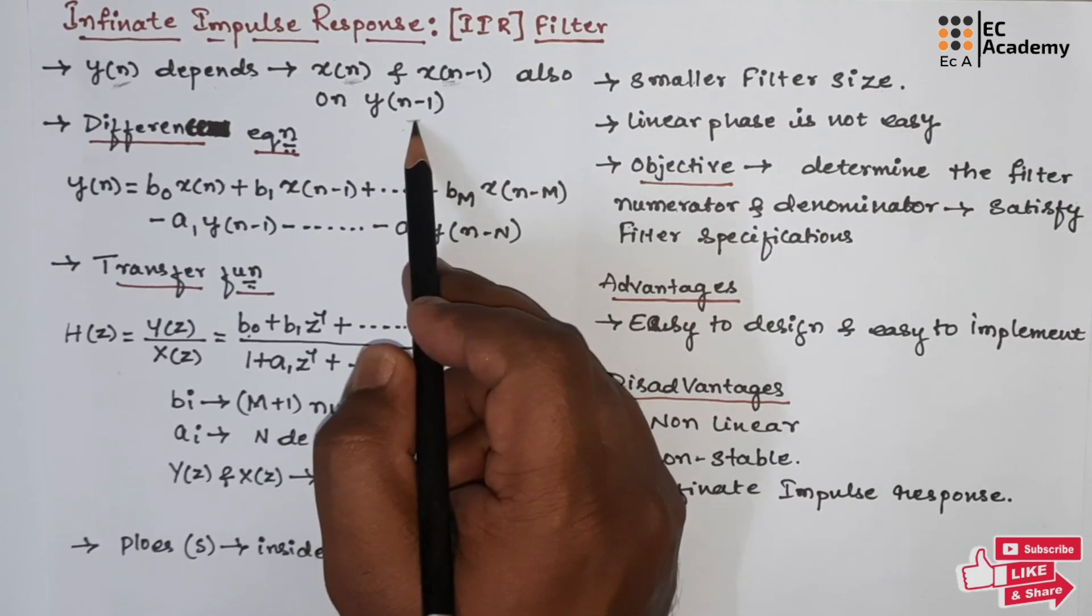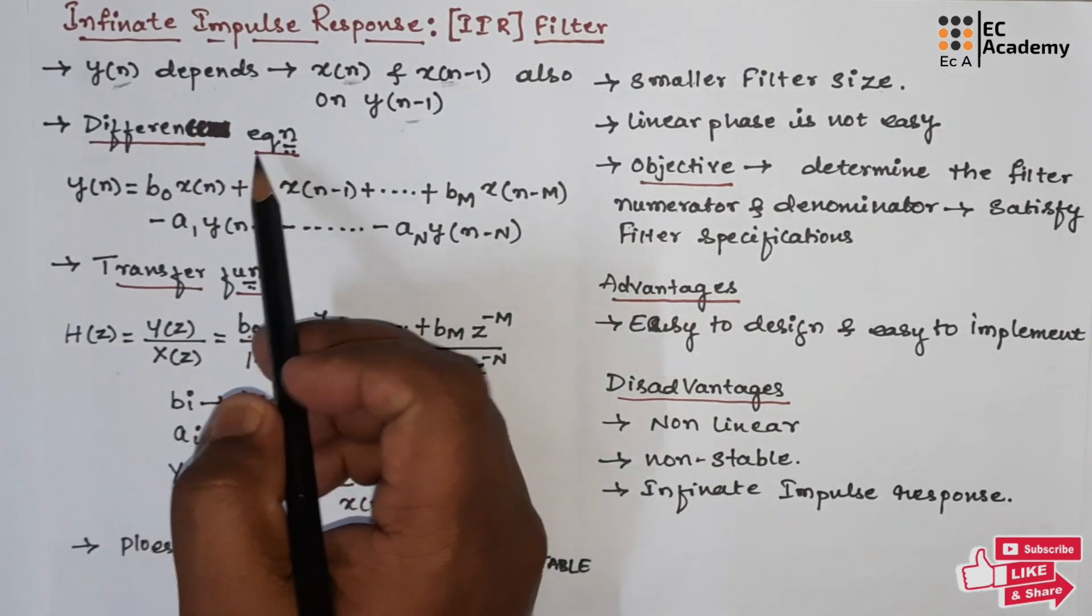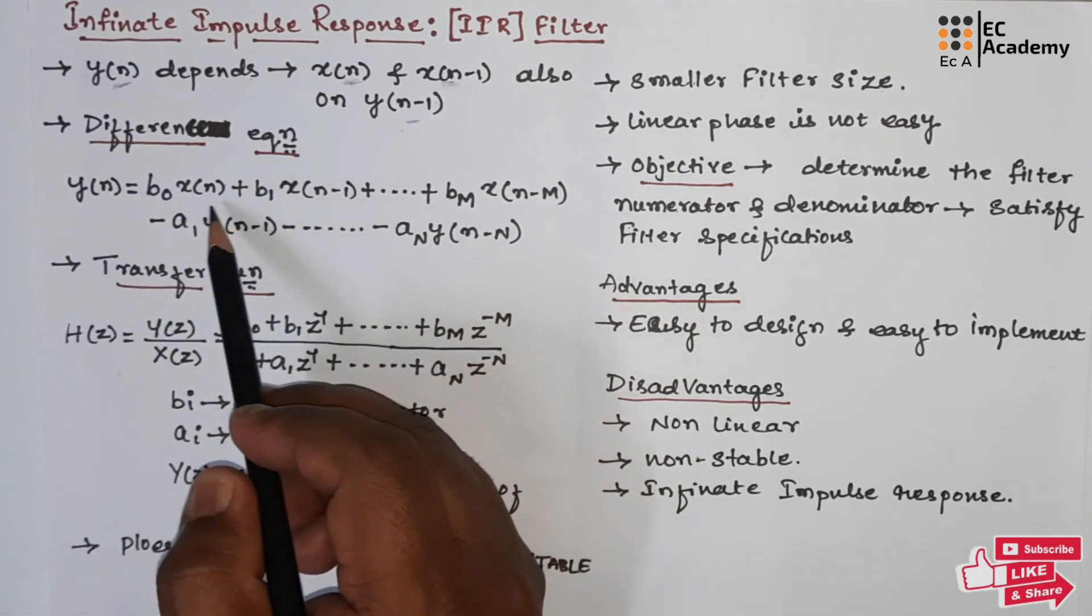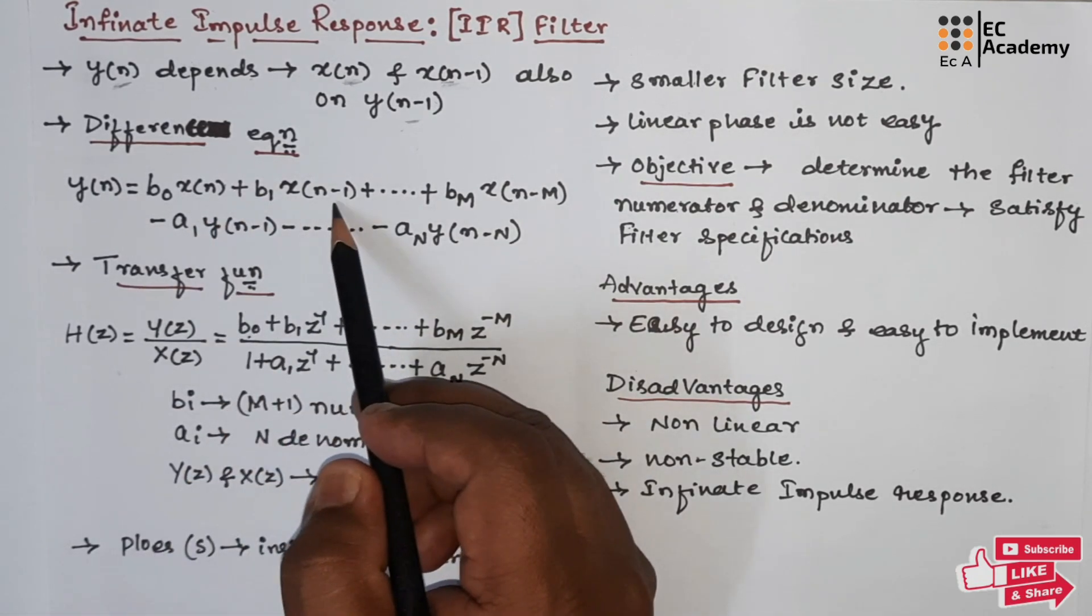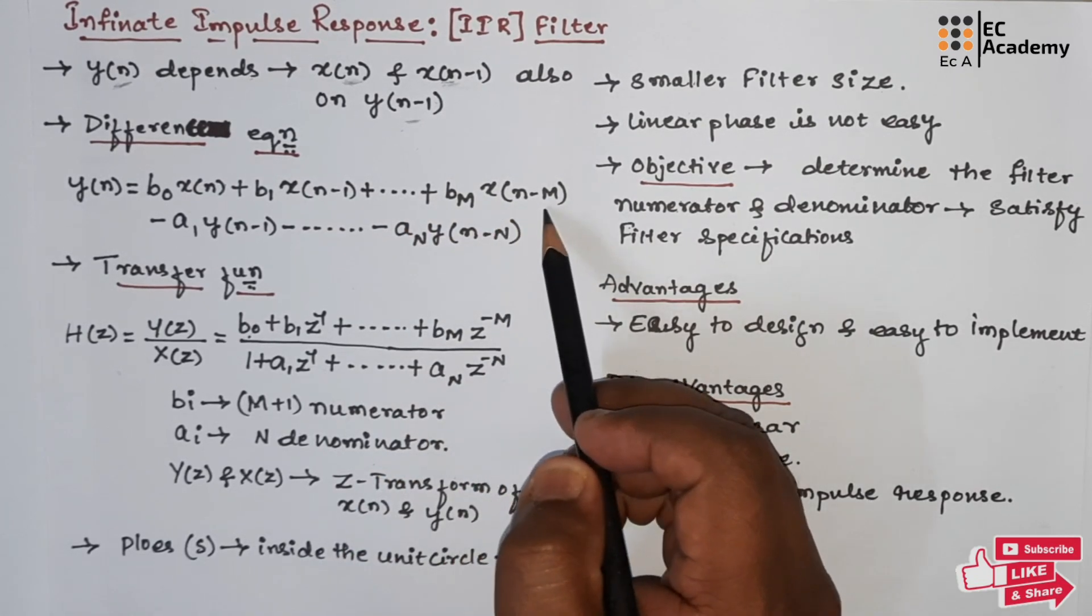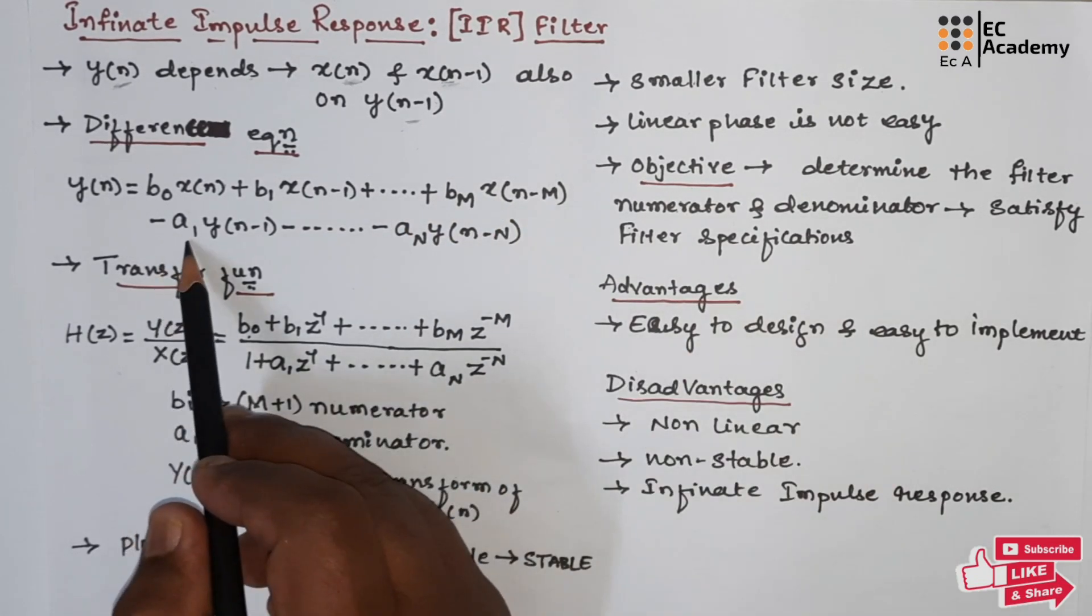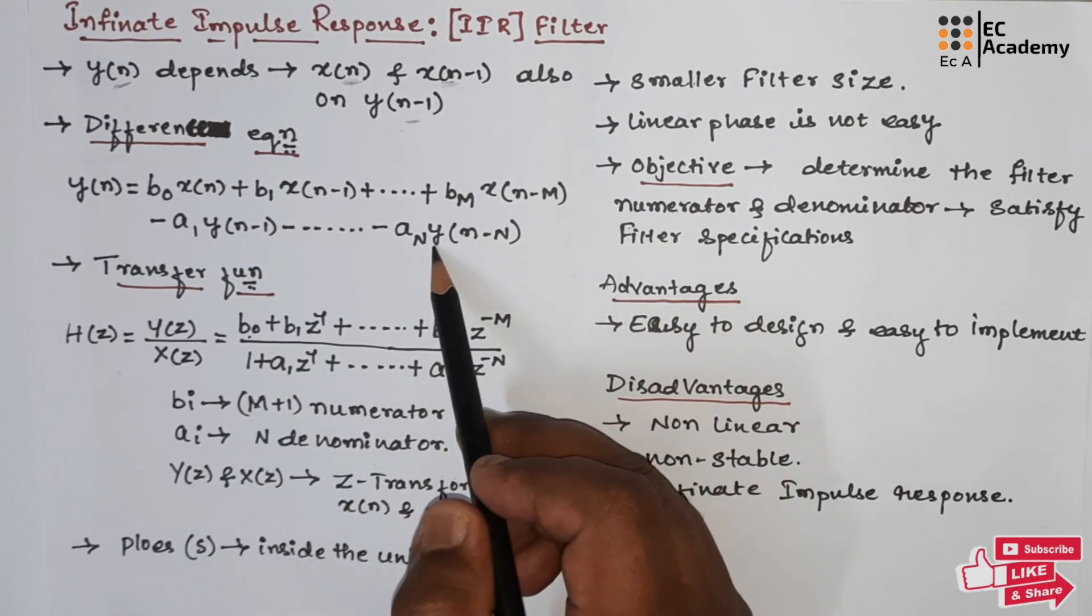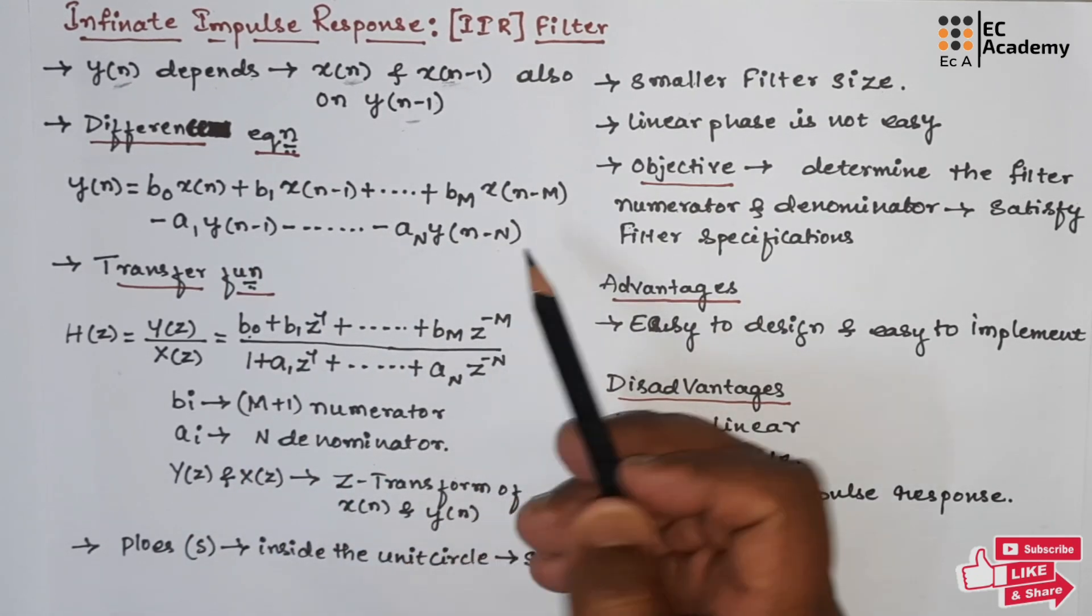The difference equation for IIR filter can be given as y(n) equals b0 x(n) plus b1 x(n-1) plus and so on bm x(n-m) minus a1 y(n-1) and so on up to an y(n-n).